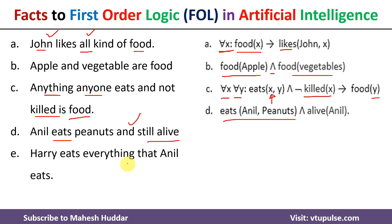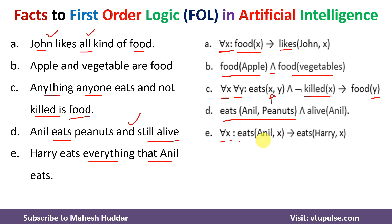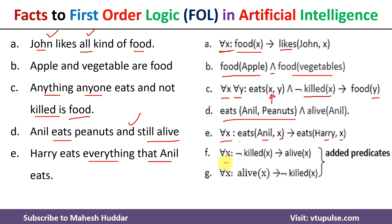The fifth fact is: Harry eats everything that Anil eats. 'Everything' requires 'for all X'. If Anil eats X, then Harry eats X. We also add two additional predicates to help prove the statement: for all X, if X is not killed then X is alive; and for all X, if X is alive then X is not killed.